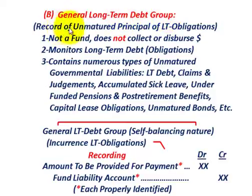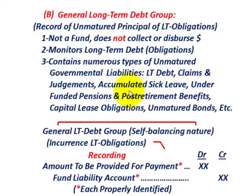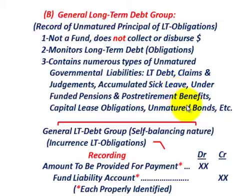The general long-term debt group is where we record the unmatured principal of some long-term obligation or long-term debt. First, it's not a fund — it does not collect or disperse money. Second, it monitors long-term debt or obligations. Third, it contains numerous types of unmatured government liabilities, including long-term debt, claims and judgments against the governmental body, accumulated sick leave, underfunded pensions and post-retirement benefits, capital lease obligations, unmatured bonds, and so forth. So you get an idea of what's included — it's not just bonds, but many other items as well.